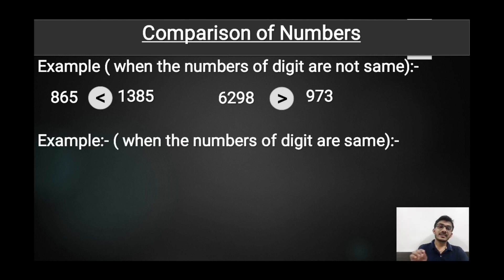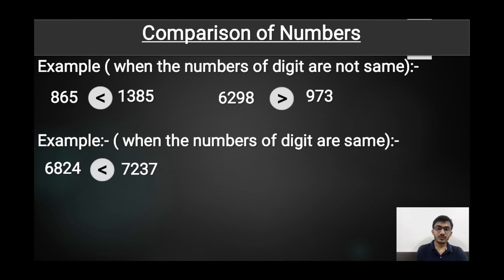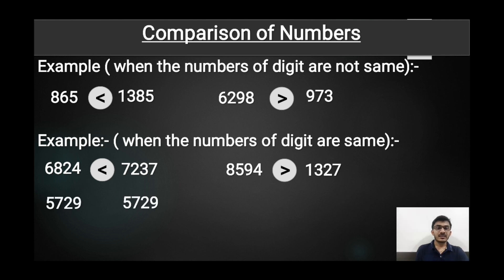When both numbers have the same number of digits, we compare the thousands place. For example, 6824 and 7237: the place value of thousands in the first number is 6000 and in the second is 7000. Since 7000 is greater than 6000, we write 6824 is less than 7237. Second example: 8594 and 1327 — place value of 8 is 8000 and place value of 1 is 1000, so 8594 is greater than 1327. In the third example, 5729 and 5729 are equal, so we put an equal sign between them.